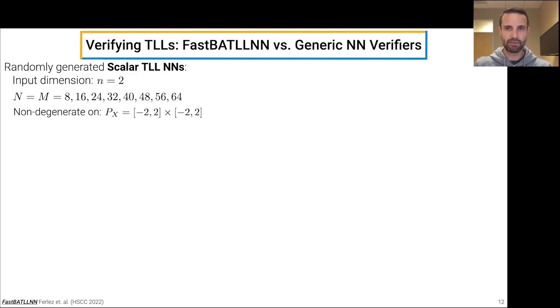So how does FastBATLLNN compare to generic neural network verifiers, that is, verifiers which can verify an arbitrary generic deep neural network? We did some numerical experiments to test this. So we randomly generated some scalar TLL neural networks with input dimension 2 and various numbers of local linear functions, and we generated these on purpose to be as non-degenerate as possible on the input polytope constraint P_X, which is the rectangle minus 2, 2 in both dimensions.